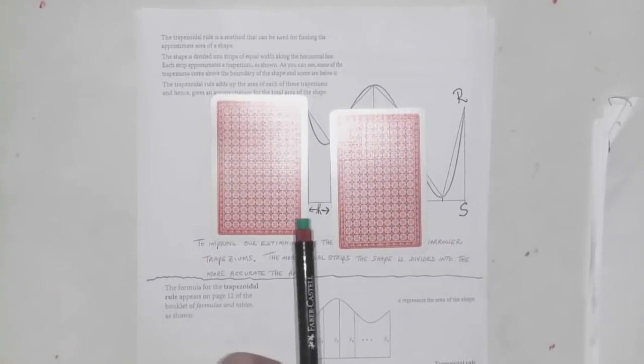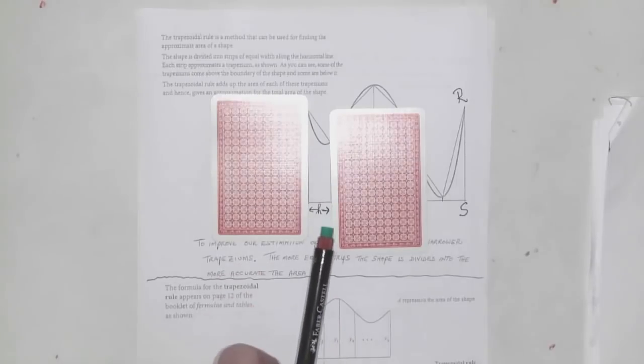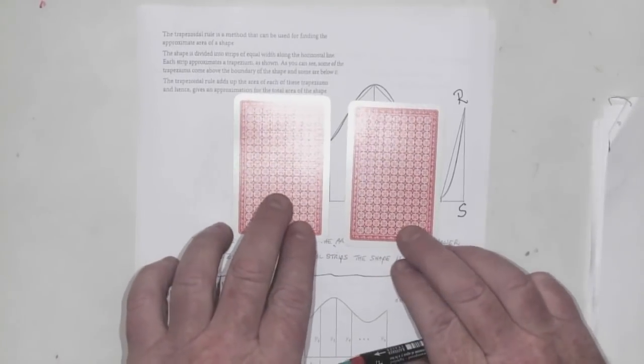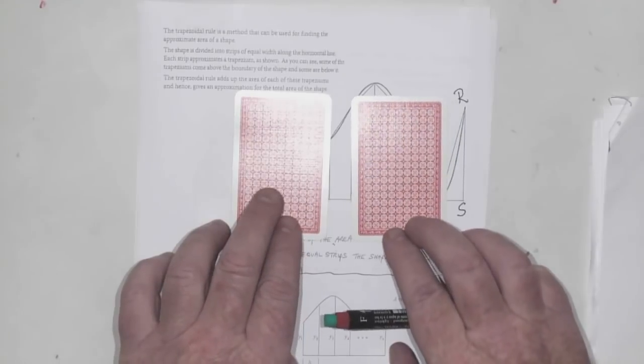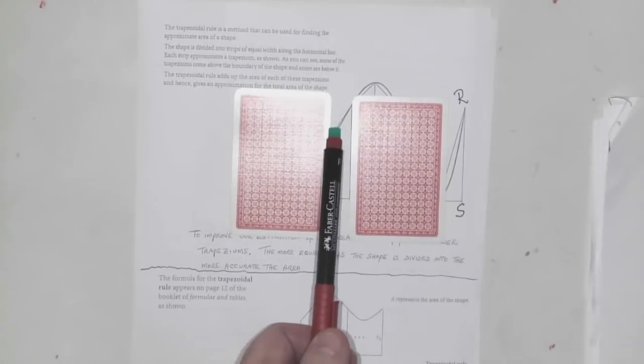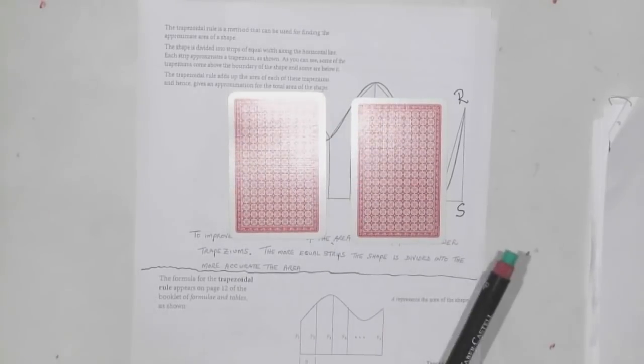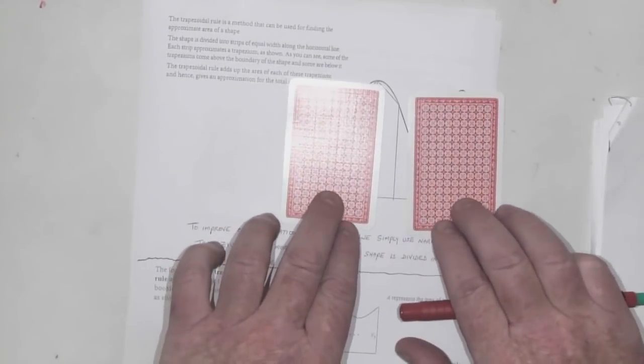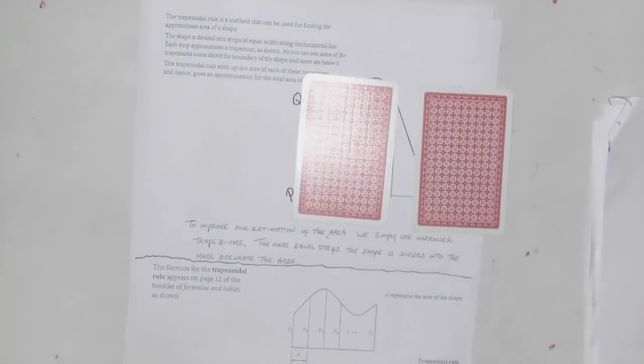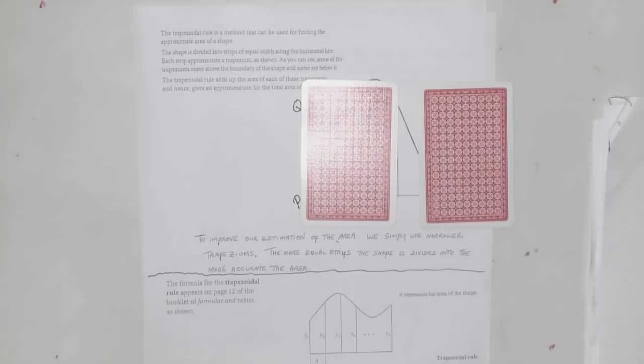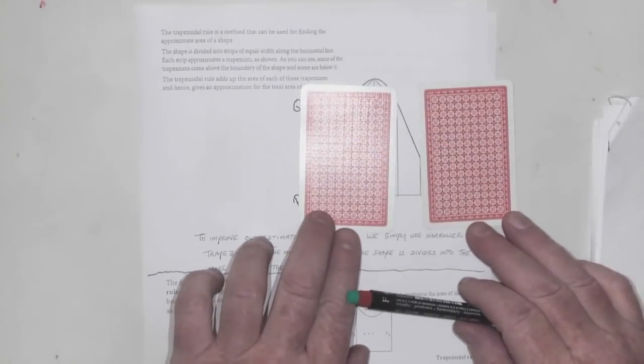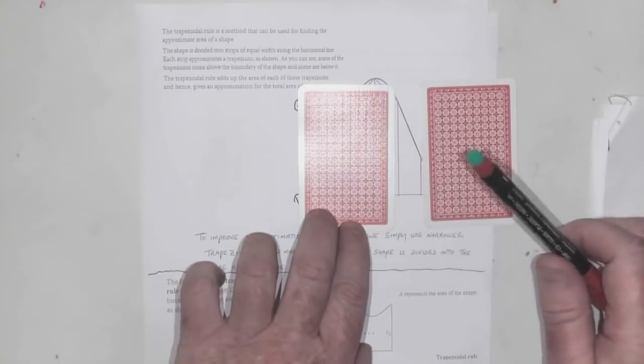Here's the first trapezium with width H and heights A and B. Here's a second trapezium—this width will be the same as before, which I'm calling H, and you've got this height and this height. As we progress, each trapezium has the same width H, and we're using this height and this height.